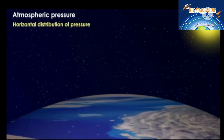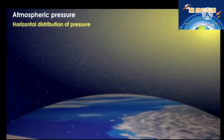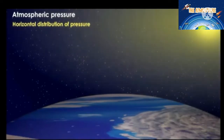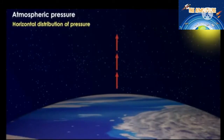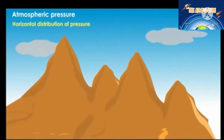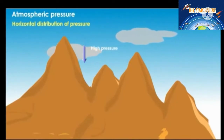Horizontal distribution of pressure: whenever there is an increase in the temperature of air, it gets heated and expands in volume and becomes lighter. Due to the less weight, the heated air rises up causing low pressure. But at high altitude, the same air gets cooled and becomes heavier, and thus it descends down causing high pressure.